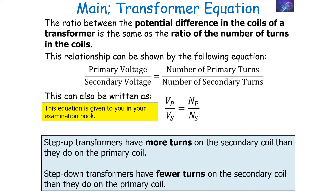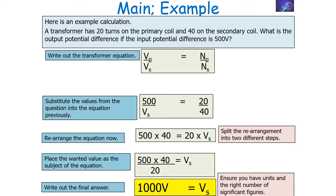Here's an example question: a transformer has 20 turns on the primary coil and 40 turns on the secondary coil. What is the output potential difference if the input potential difference is 500 volts? Write out the equation: VP over VS equals NP over NS. Then substitute the values in — we know VP, we know the number of turns on the primary, and we know the number of turns on the secondary — giving 500 over VS equals 20 over 40.